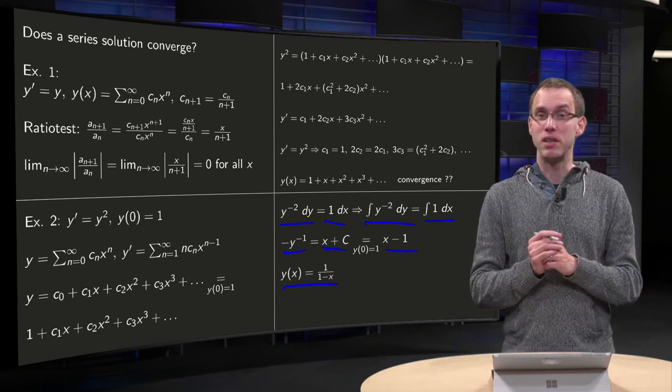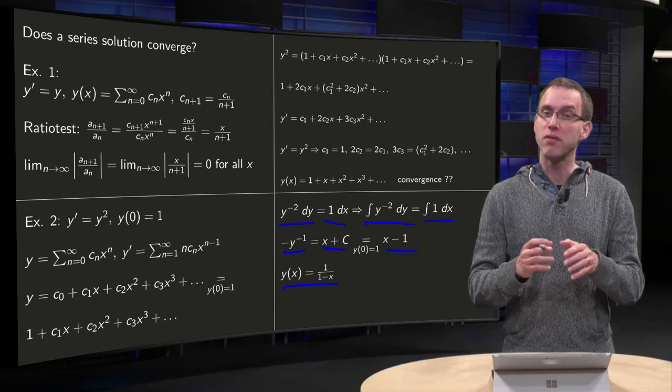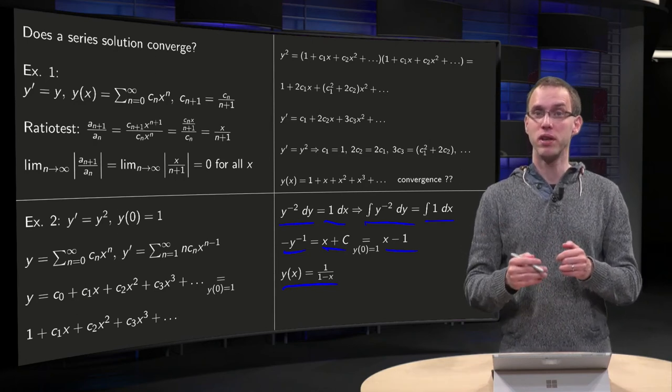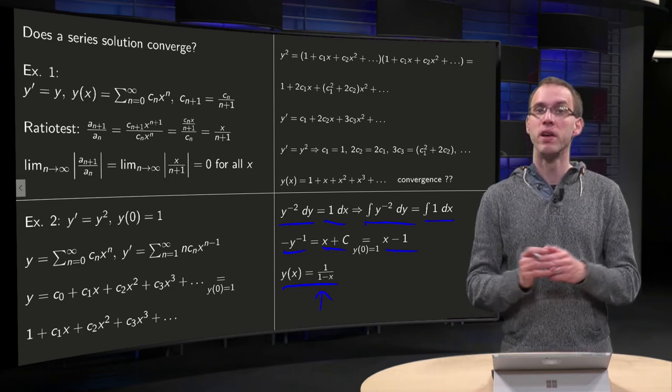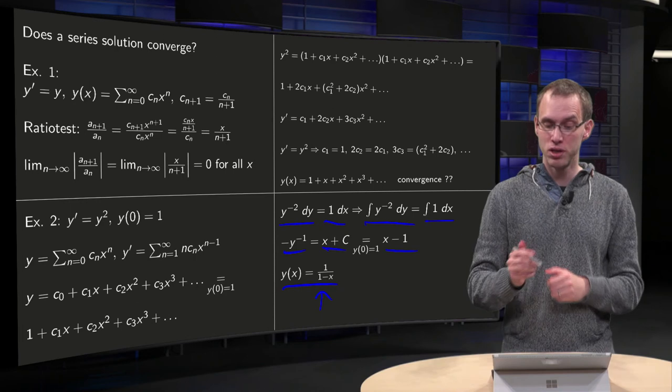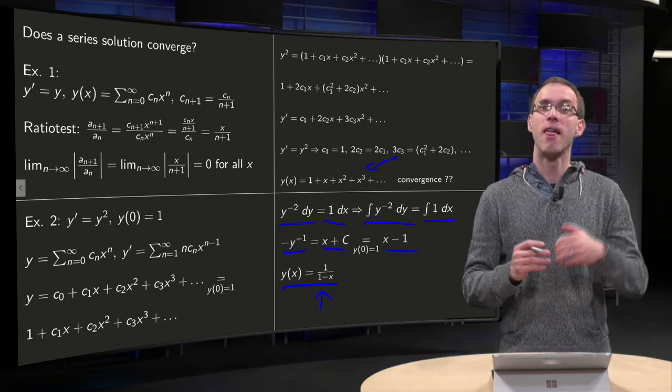And then you'll see that something is going wrong if x starts to grow. Everything is fine up to x equals 1, but at x equals 1 your solution is going to blow up. You see it from the analytic solution, you don't see it at all from the power series solution over here.